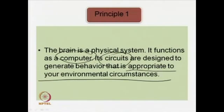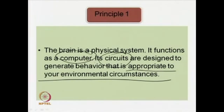The brain is a physical system that functions like a computer, processing information. The circuits of the brain have a purpose: to generate behavior in organisms — not any random kind of behavior — but behavior that is appropriate to the environmental circumstances in which the organism lives. As information is received and decisions are taken, the circuits must generate appropriate behavior toward a certain goal or purpose.